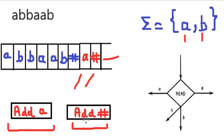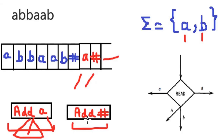An important property of the add state is that branching is not allowed on it. At a time, we can execute the add state for only one symbol, and the add state will add only one symbol into the queue at a time.